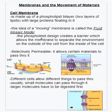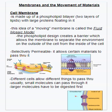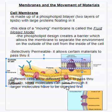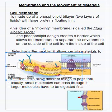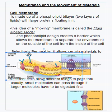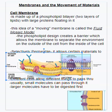The phospholipid design creates a barrier which allows the membrane to separate the internal environment from the external environment. It is selectively permeable, so it has receptors, proteins, and connecting molecules. These include carbohydrate chains that stick to the cell membrane and protein passages through the cell membrane.